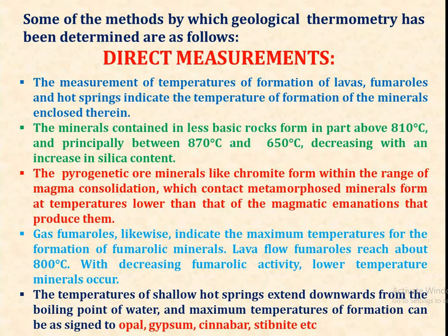Gas fumaroles likewise indicate the maximum temperature for the formation of fumarolic minerals. Lava flows reach about 800 degrees Celsius. With decreasing fumarolic activity, lower temperature minerals occur. The temperature of shallow hot springs extends downward from the boiling point of water, and maximum temperature of formation can be assigned to opal, gypsum, cinnabar, stibnite, etc.